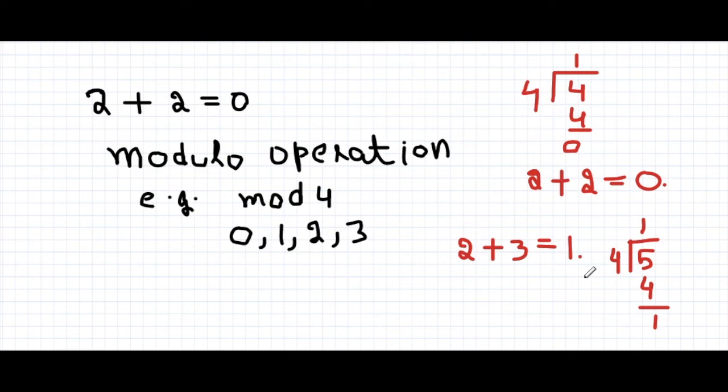It means in mod 4, 5 is equal to 1, so 2 plus 3 is equal to 1. So this is how we deal with these types of equations in modulo operation. Like the video, subscribe the channel. Thanks for watching.